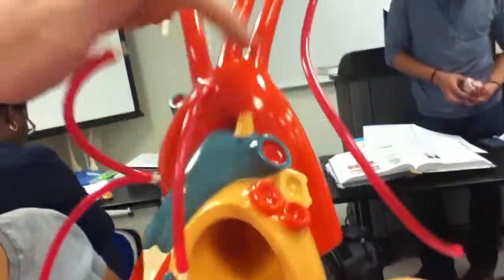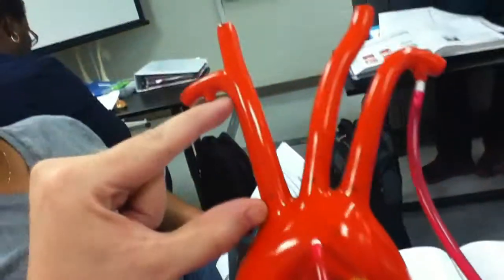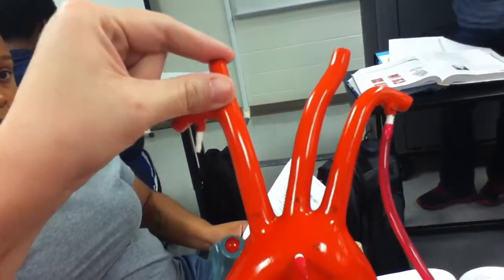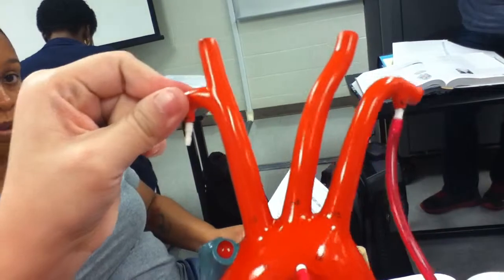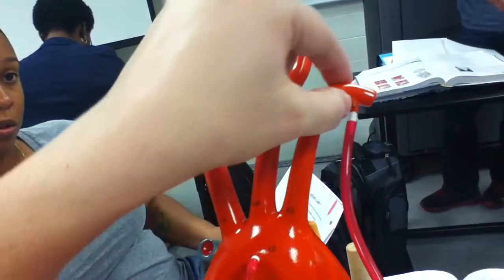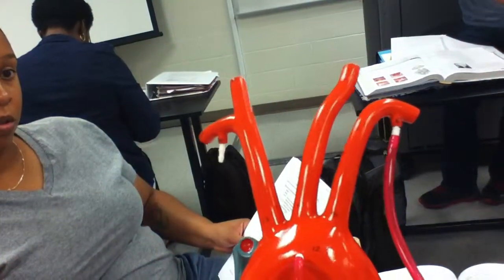This is the aorta: ascending, arch, and descending. The brachiocephalic artery is this portion. The right common carotid is here. The right subclavian artery is here. The left common carotid is here, and the left subclavian here. I keep getting mixed up.